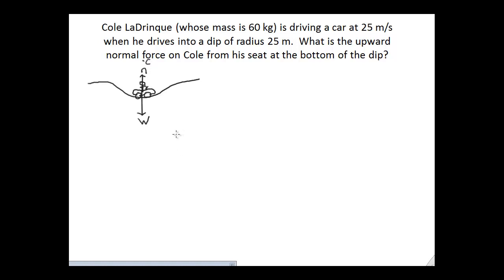In a centripetal force problem, the net force always points toward the center of the circle. Since the center is above Cole at the bottom of the dip, the normal force must be greater than the weight force. This is the key insight: the winning force points in the same direction as the center of the circle.